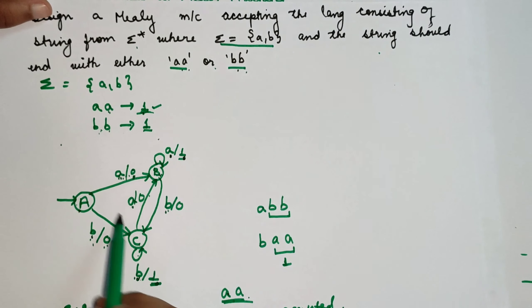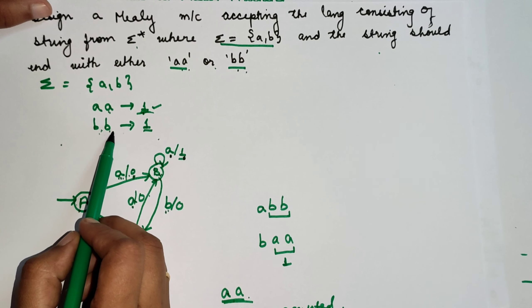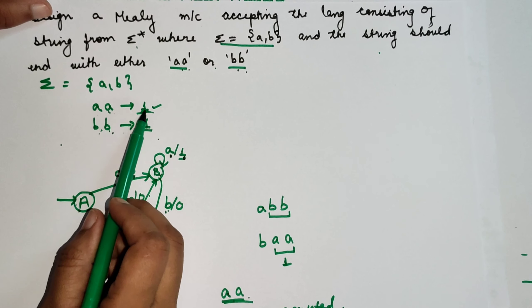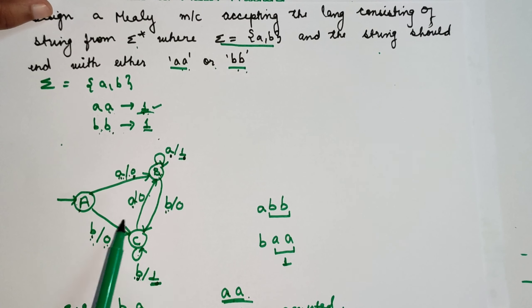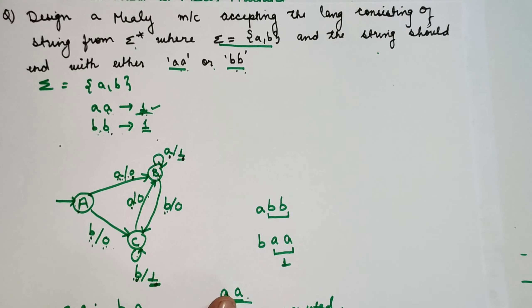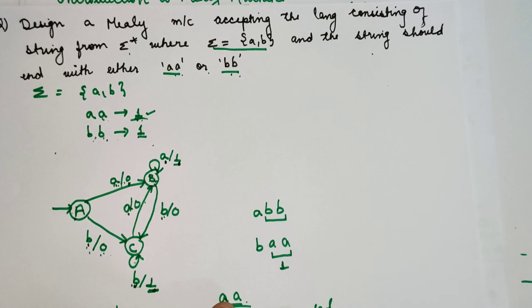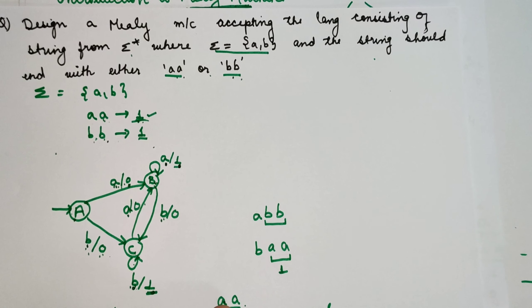So just assume first that double A is going to print 1, then make the DFA transitions, and then just check it. This is how we construct the Mealy machine. I hope you understand. If you understand, please don't forget to like and subscribe to my channel. Thank you.